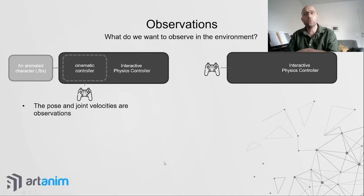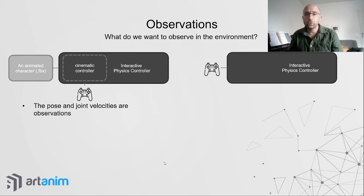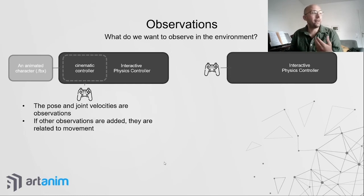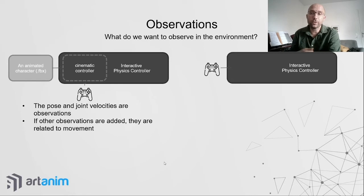In addition to rewards, you want to provide the learning agent with observations. For following a kinematic controller, you typically want the current pose and joint velocities as observations, so the agent knows the character's current state and can apply forces to move to the next pose. Additional observations are generally related to movement, since the kinematic controller handles user input and target matching.